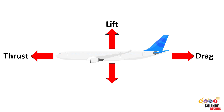Drag, also called air resistance, which pushes it backward. And weight, which pulls it down. Note that a real airplane with engines applies a continuous forward thrust force.